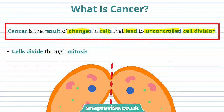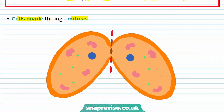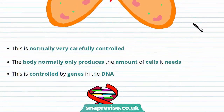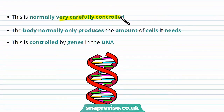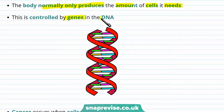We know that cells divide through mitosis, and this diagram shows a cell splitting during mitosis. Mitosis is something that's very carefully controlled by the body, as the body normally only produces the amount of cells it needs — it doesn't want to produce more cells and use more energy than necessary. Cell division is very carefully controlled by genes in DNA, and the genes in DNA control our characteristics, including how many cells the body needs.